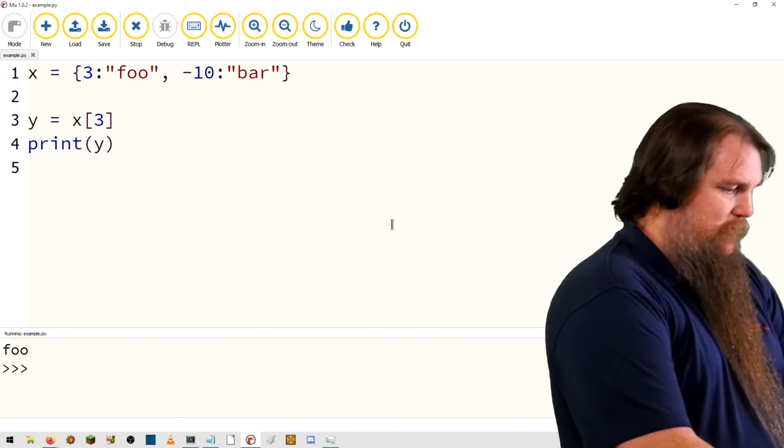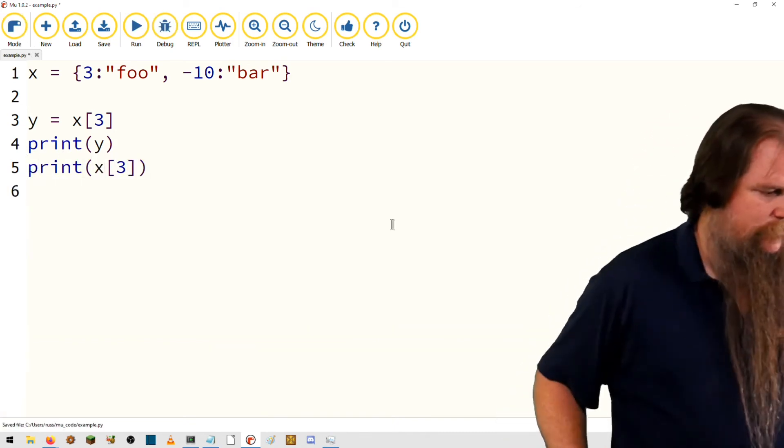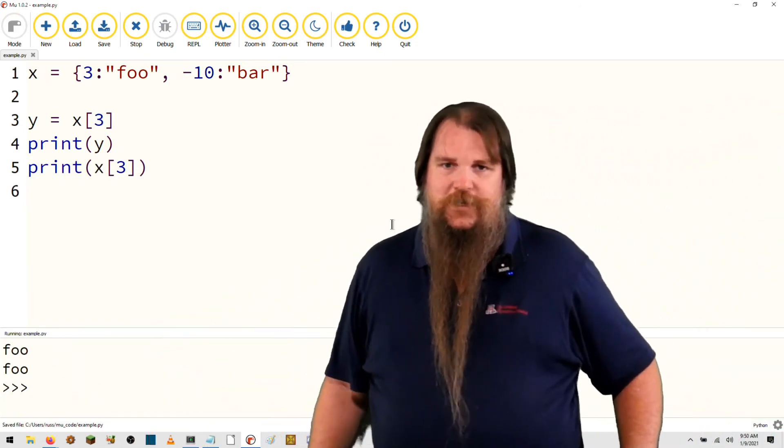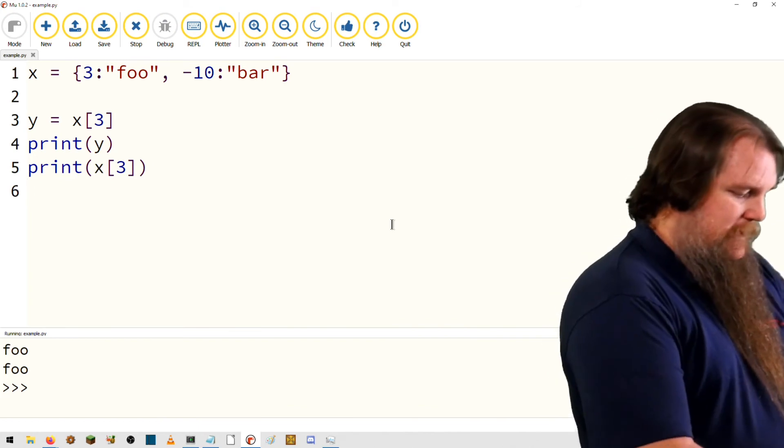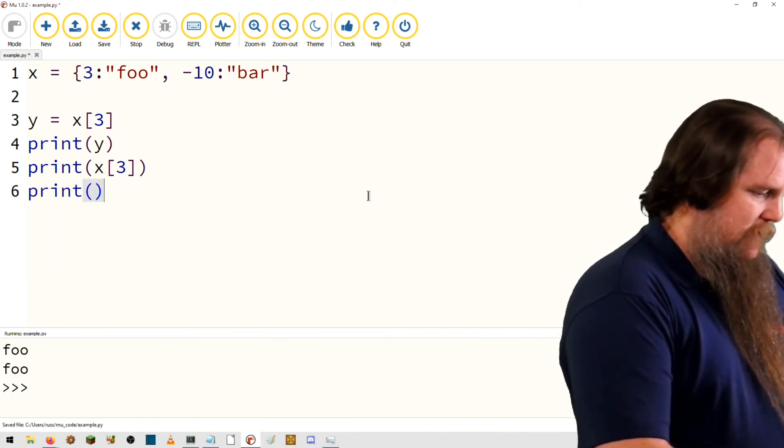Okay, of course we can print it directly. So this first one is printing y, the second one is printing x[3]. Can we print the dictionary itself? Yes, we can. Python will happily do that.